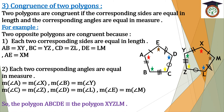From these two conditions, our two polygons ABCDE and XYZLM are congruent.